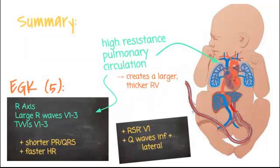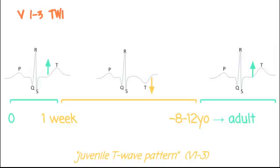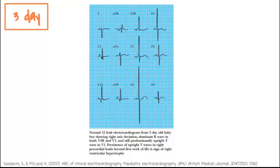Next let's look at T wave inversions. In adults, we expect upright T waves in V1 through V3, and if they're not, we're concerned for ischemia. However, in kids, you actually expect T wave inversion in V1 through V3. Between one week and about 8 to 12 years old, they should have inverted T waves — this is called the juvenile T wave pattern; it's normal and expected. Interestingly, in the first week of life, you might actually see an upright T wave.